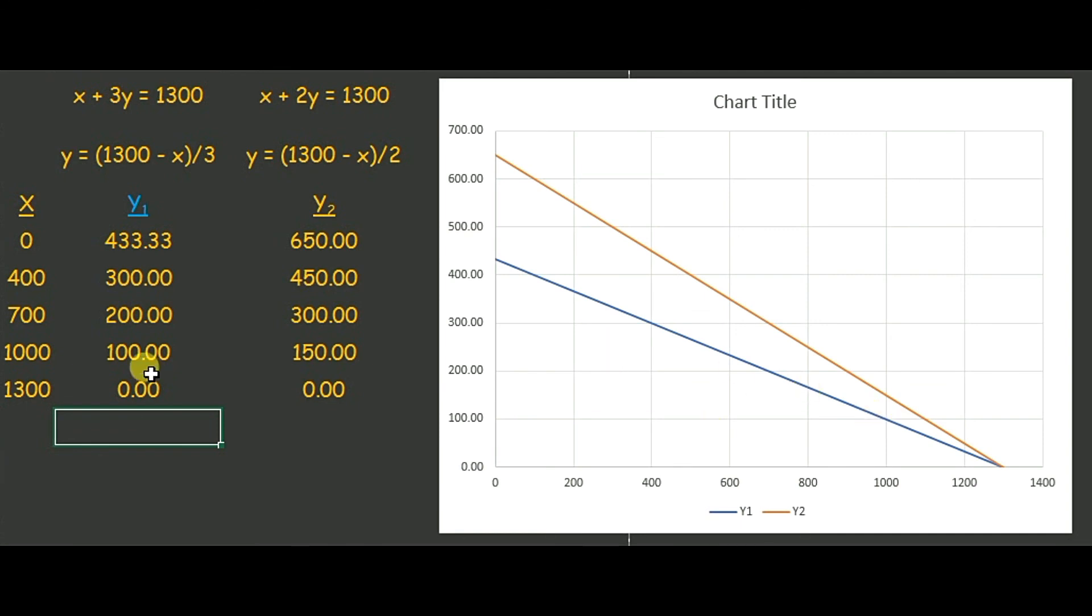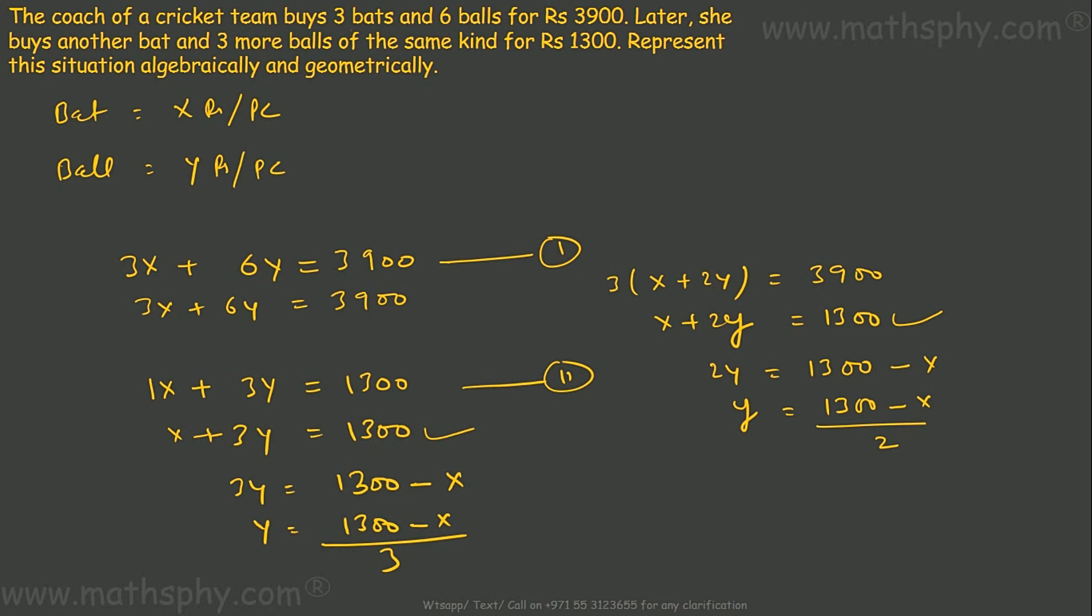And x is 1300, which gives me an answer which says ball should be free of cost and bat should be 1300 rupees each. So this was the graphical representation, and this one here is the algebraic representation.